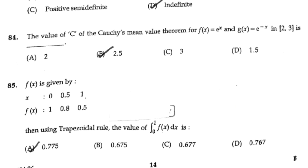Given f(x) values at certain x points, using the trapezoid rule to solve, the answer is 0.775, answer option A.